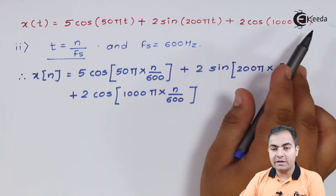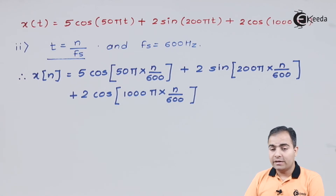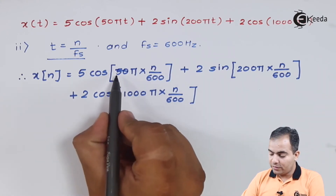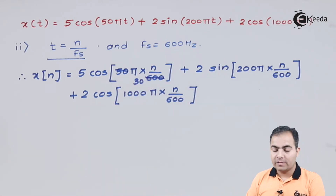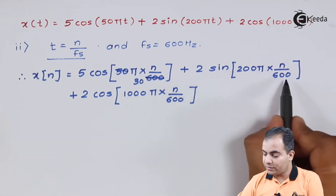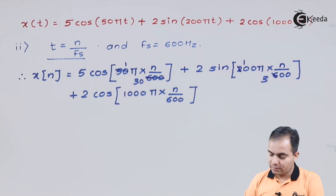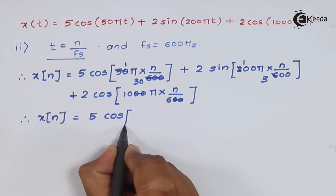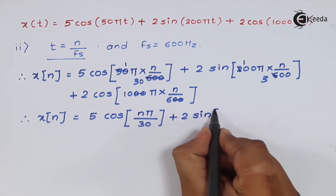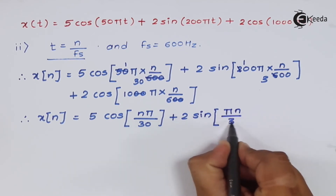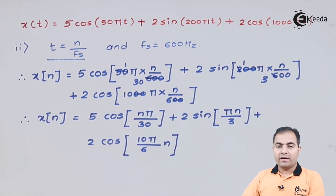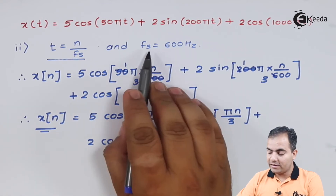After substituting t = n/600 into the signal, we simplify each term: 50/600 = 1/12, so the first term becomes 5cos(50πn/600). For the second term, 200/600 reduces to 1/3. For the third term, 1000/600 simplifies, giving 10π/6. This is the discrete time signal x(n) when sampling frequency is 600 Hz.